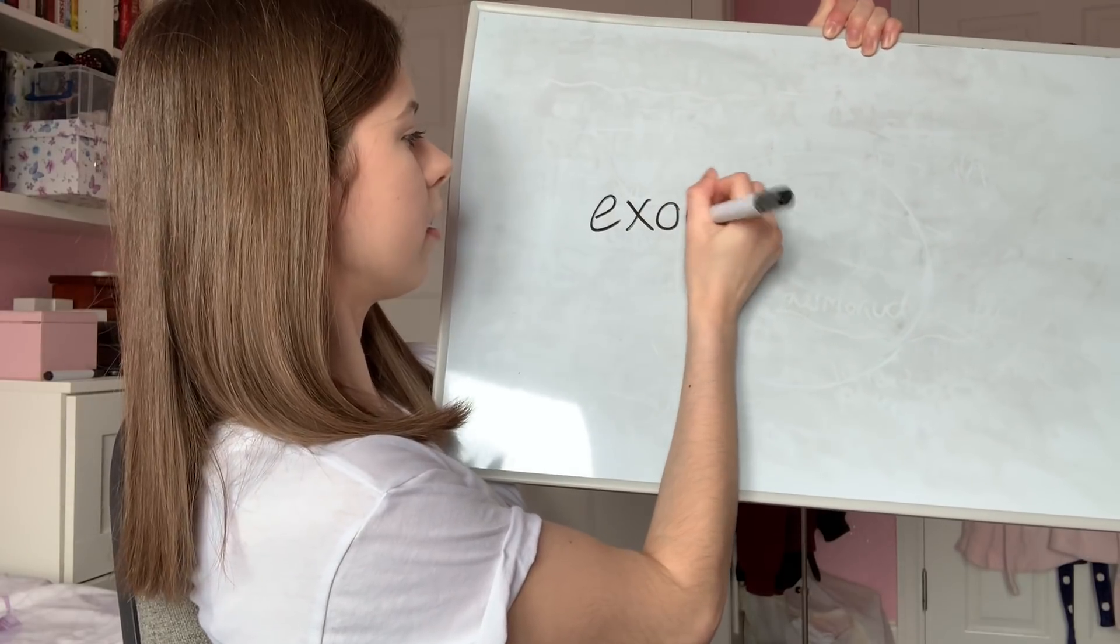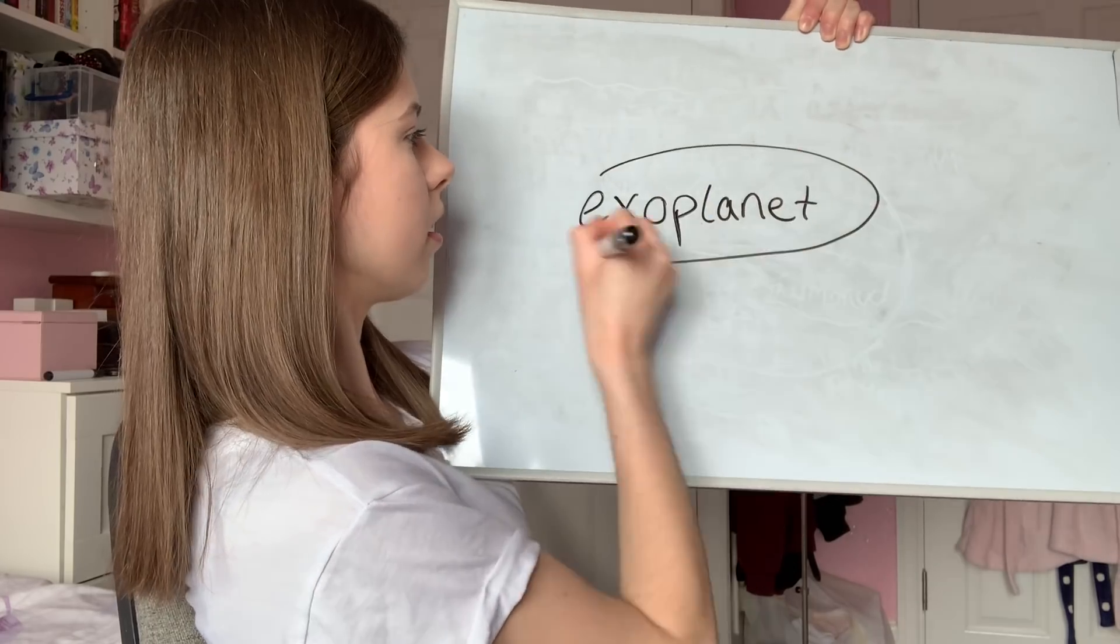And what are exoplanets? Because they are the topic of this video. Exoplanets are planets that are not in orbit around our sun. So our solar system has eight planets, but there are lots of other planets out in the universe that are not orbiting our sun, that are not in our solar system.